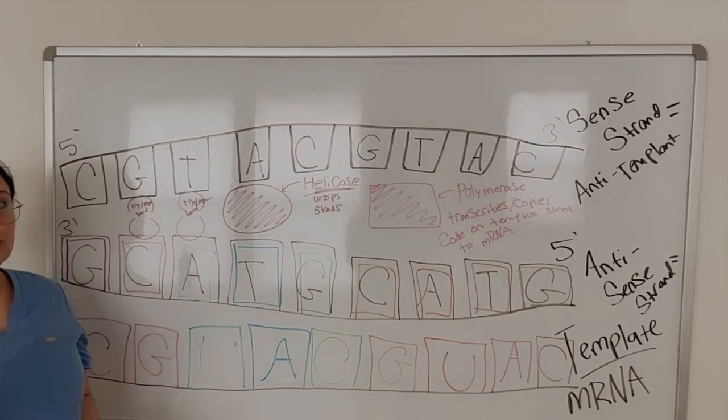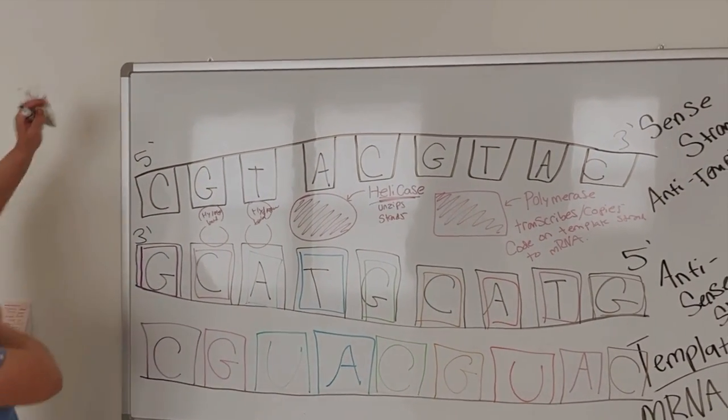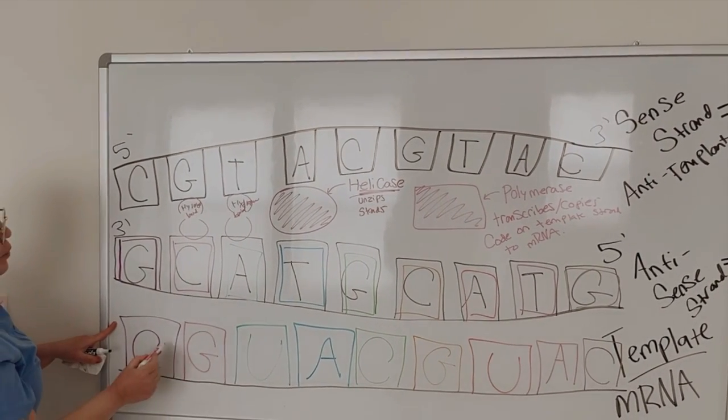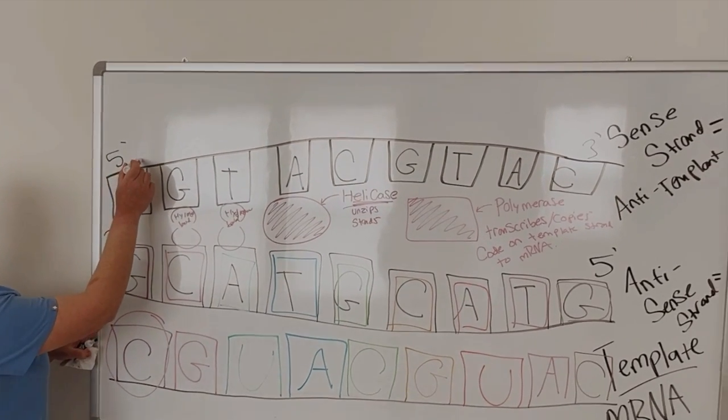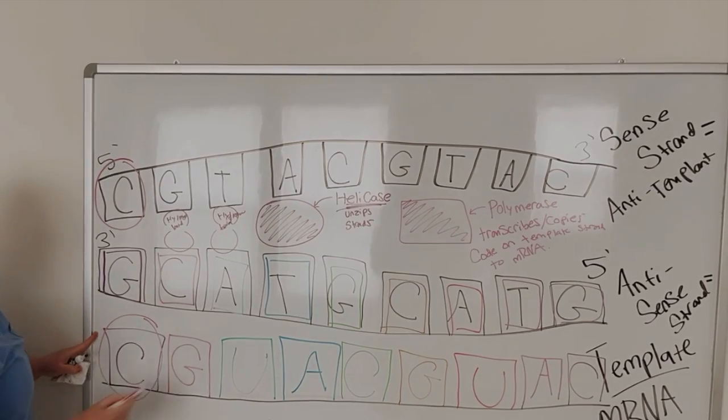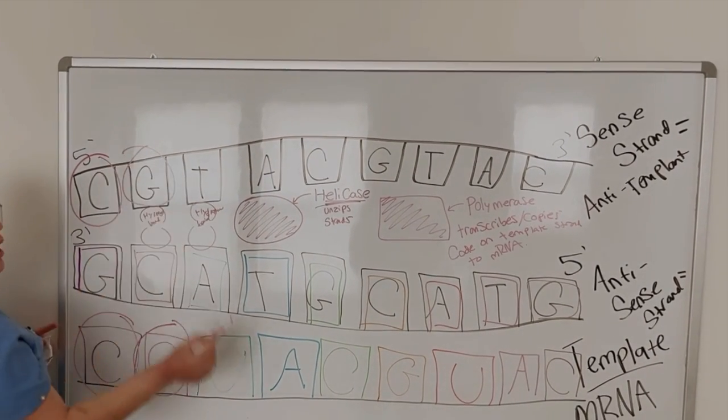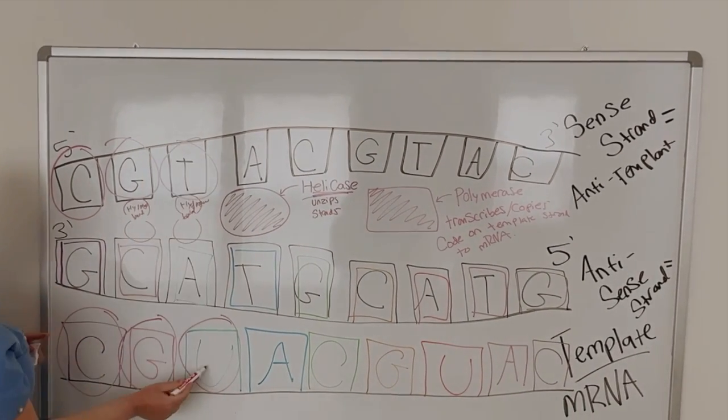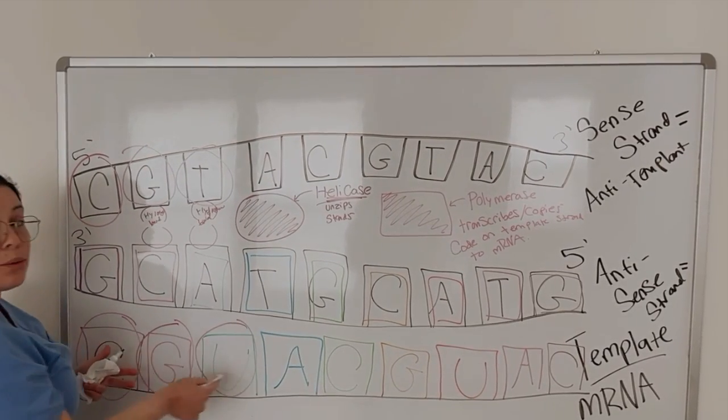Now, this is a super important part. Recognize that, look at our sequence here. We've got cytosine here, and if we look at our sense strand, we've got cytosine. And then we've got guanine, and then we've got guanine. And then we've got uracil and thymine. Well, uracil is a thymine of RNA, right? We always replace it with uracil.